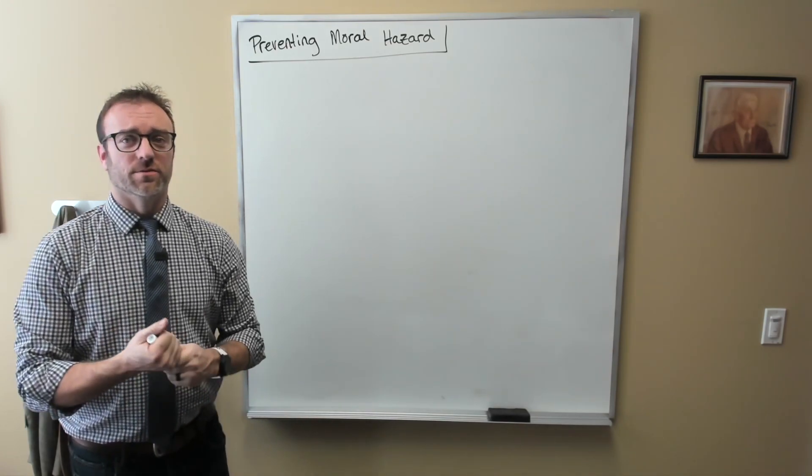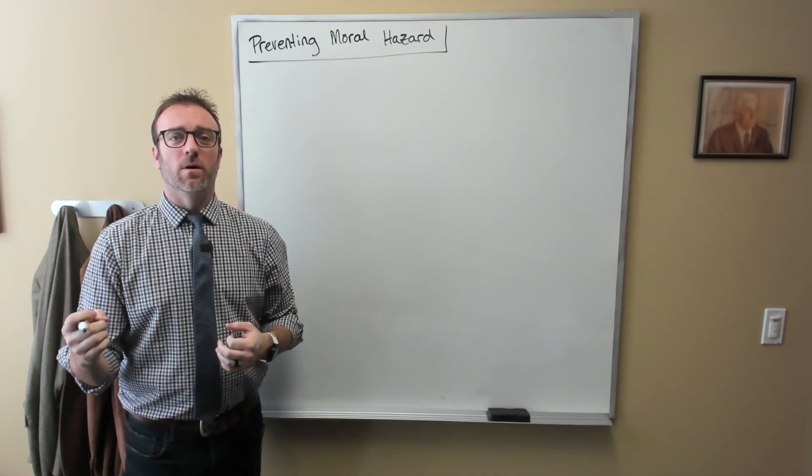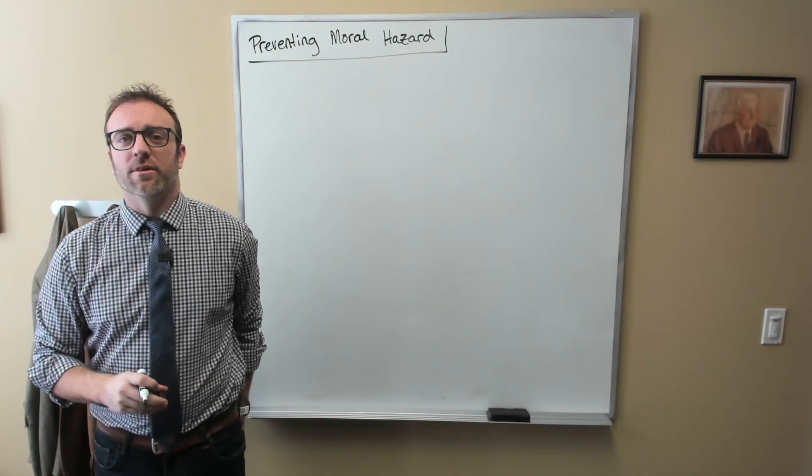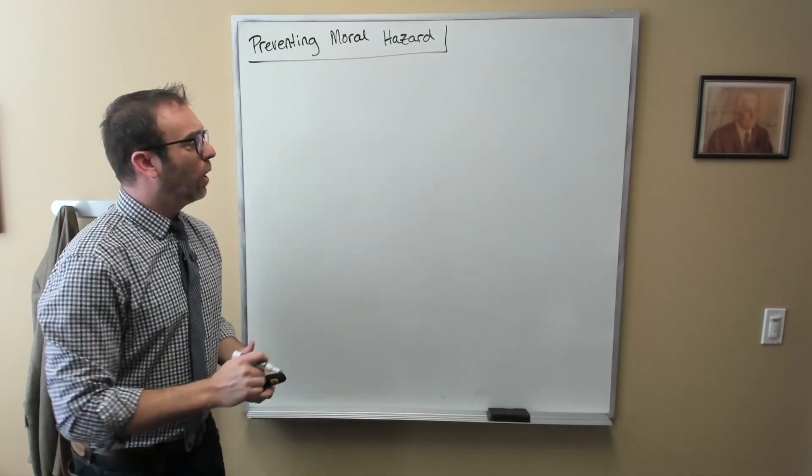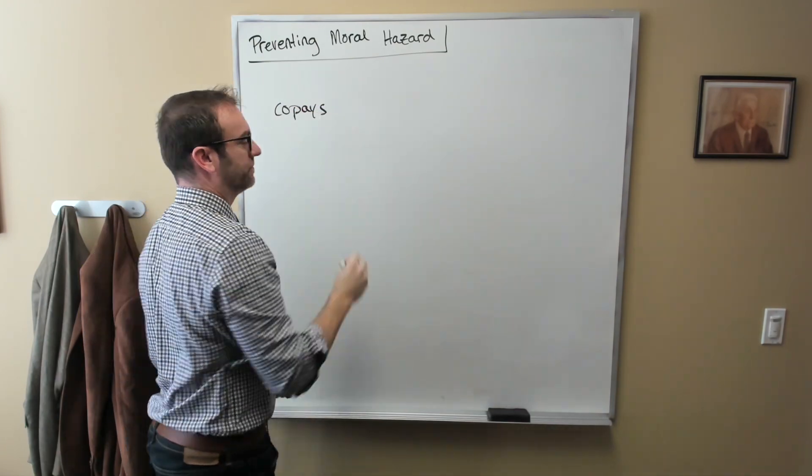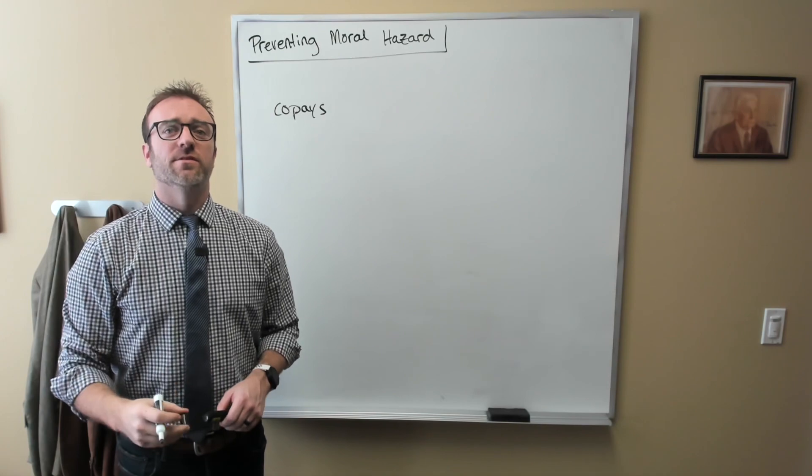One way to do this is for insurance companies to require what are formally called proportional co-insurance payments. More commonly, these are known as co-pays. Though I should point out that co-pays can take many forms.